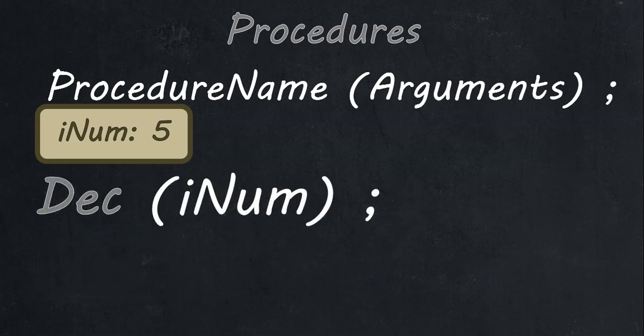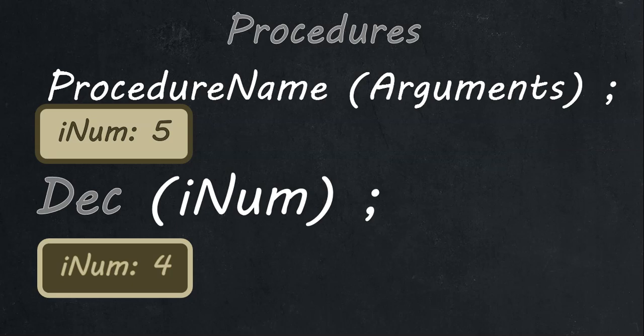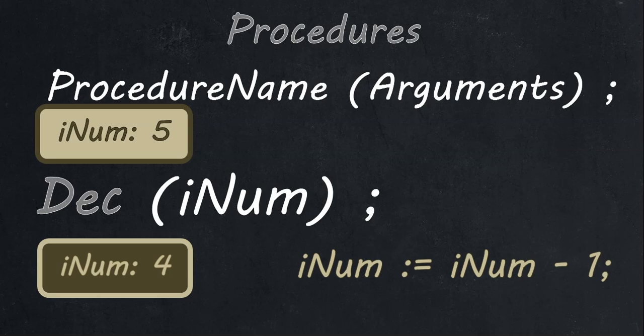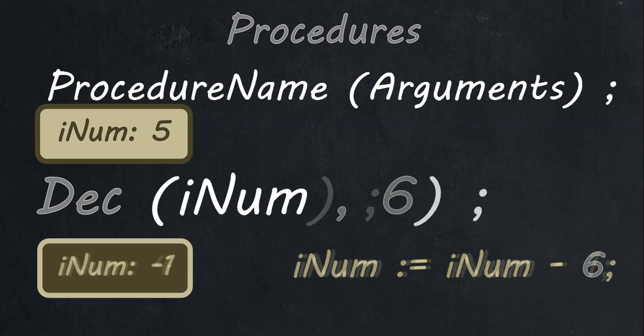The other procedure is dec — decrease. If iNUM was 5 before calling dec(iNUM), after it'll be 4. It's the same as iNUM := iNUM - 1. Just like inc, you can give dec a variable and a second integer — dec(iNUM, 6) — which decreases by that integer value. So if iNUM was 5, after dec(iNUM, 6) it would be negative 1, because iNUM := iNUM - 6.